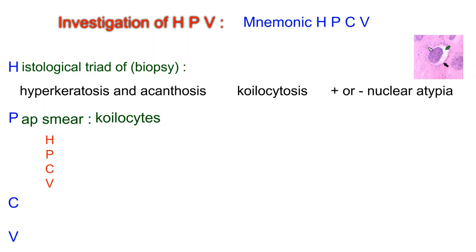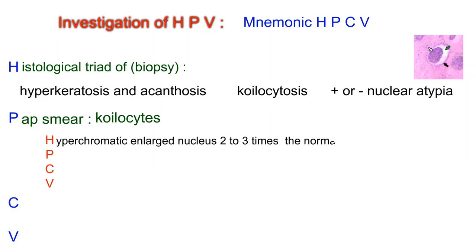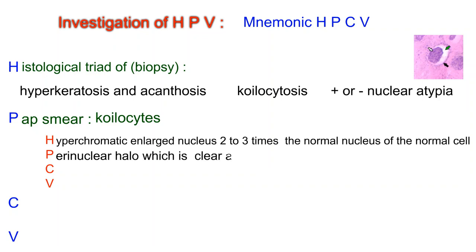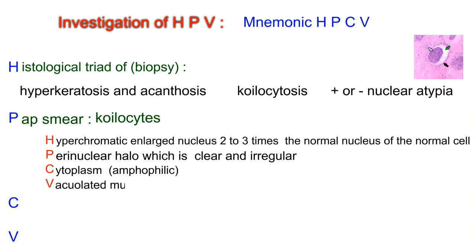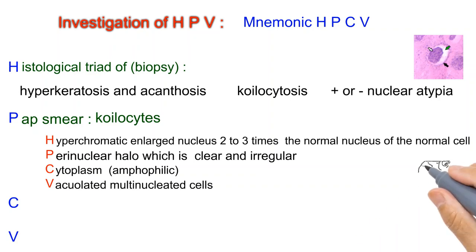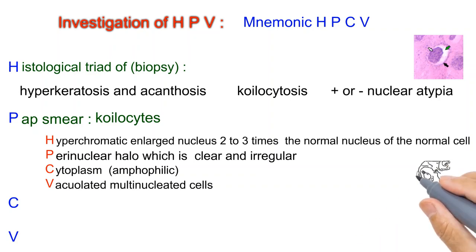Koilocyte features: H — hypochromatic enlarged nucleus, 2–3 times the normal nucleus of a normal cell; P — perinuclear halo, which is clear and irregular; C — cytoplasm may be eosinophilic, basophilic, or amphophilic, appearing fuchsia red. It is a vacuolated multinucleated cell. Koilocytosis is pathognomonic for HPV infection.